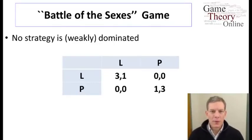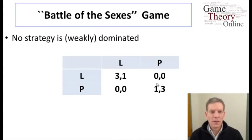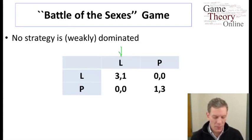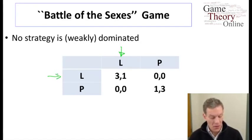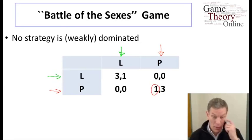Let's look at a couple of examples and get some feeling for equilibria. Here is the battle of the sexes game. There are no dominant strategies here, so the decision of the row player depends on what the column player is doing. Whether they choose L or P depends on whether they think the other player is going to choose L or P. If the column player is choosing L, then the best response of the row player is L. But if the column player is choosing P, then the best response of the row player is P as well.